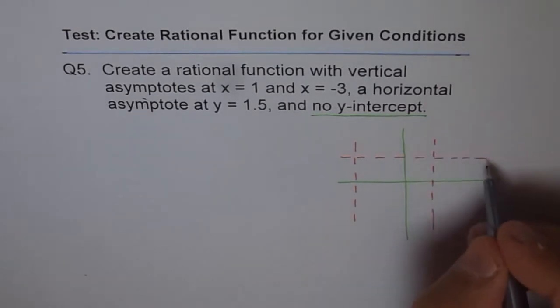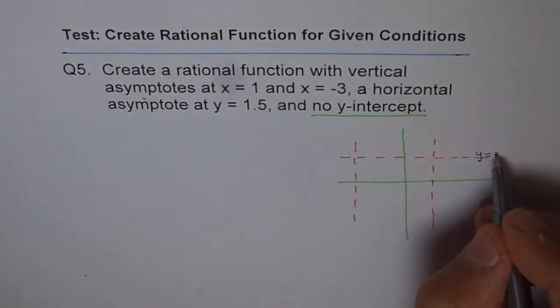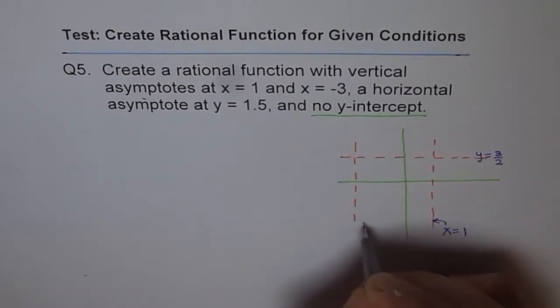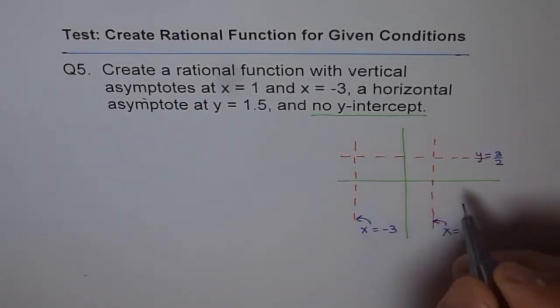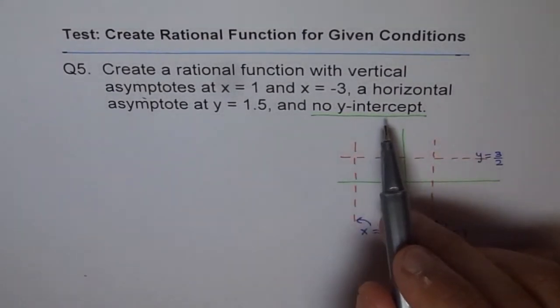So this is our y equals 1.5, which I can write as 3 over 2. 3 over 2 is 1.5, and here we have equation as x equals 1 and this is x equals minus 3. And with no y-intercept.